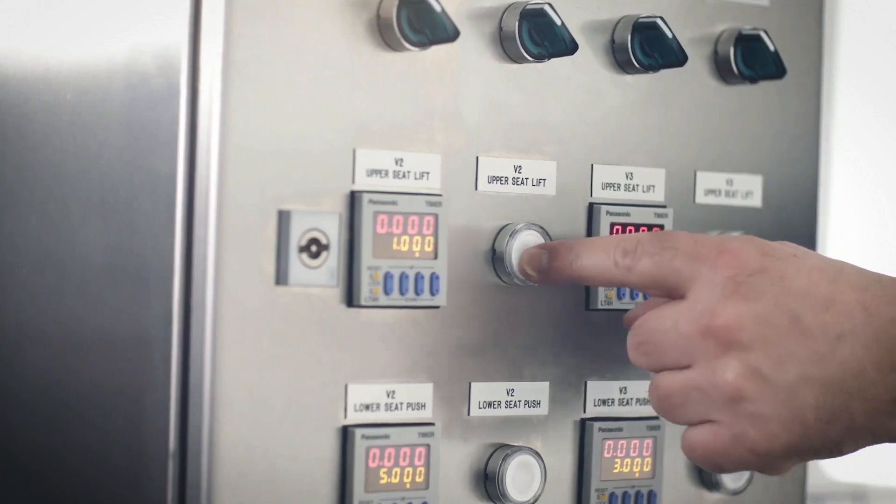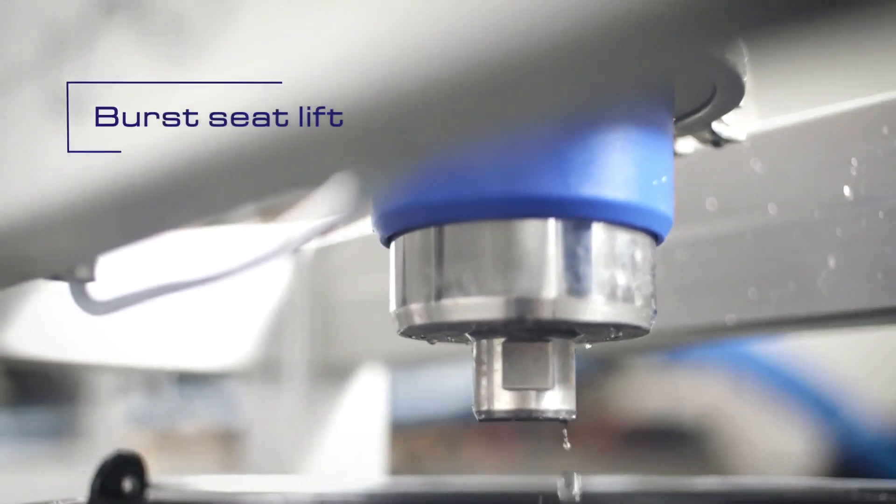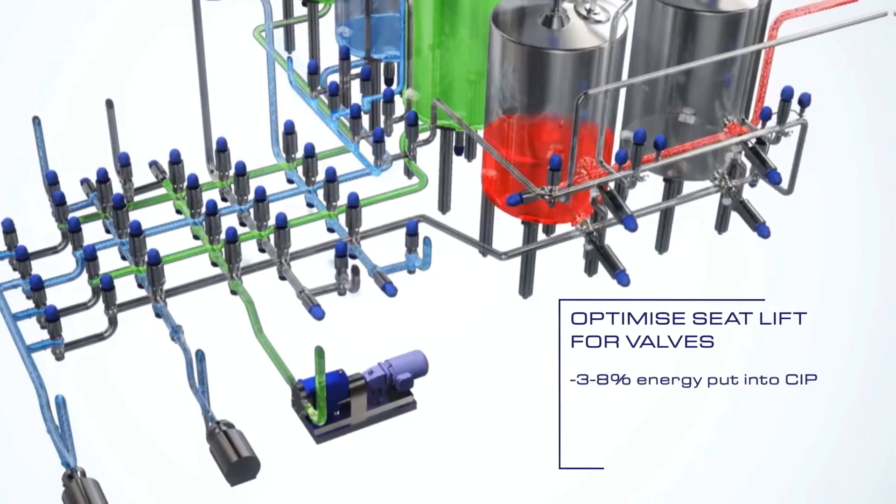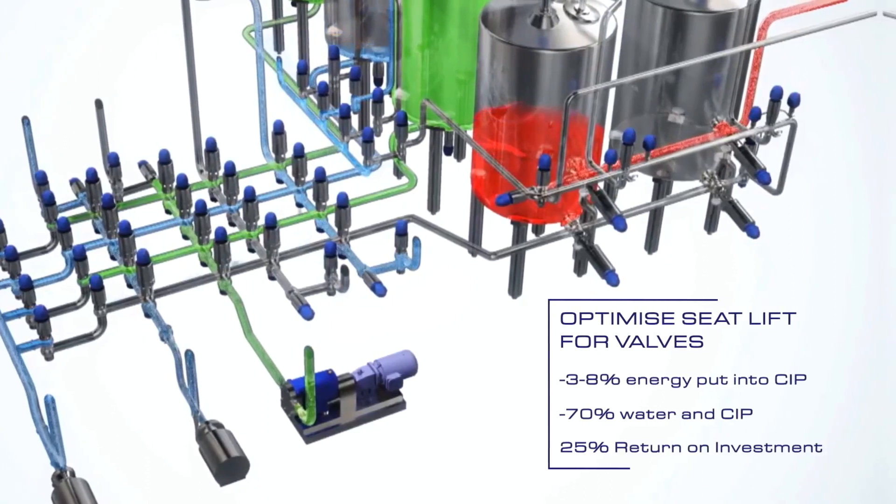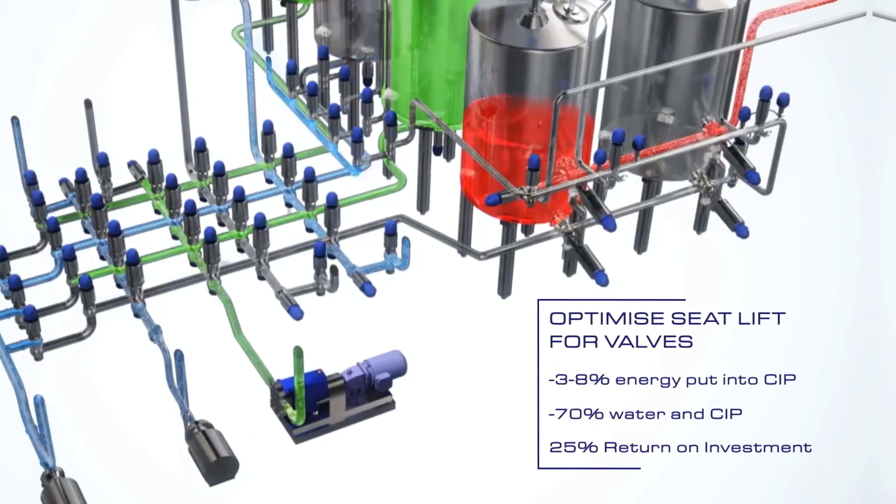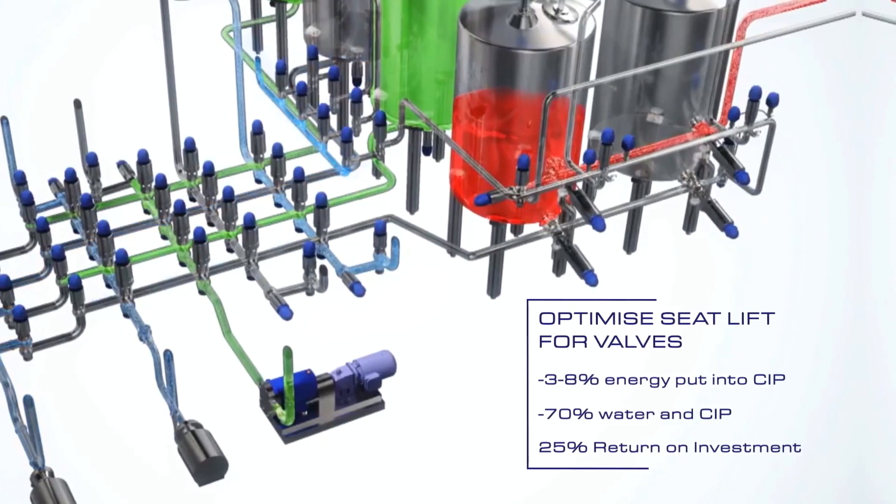Burst seat lift cleaning involves quick and repetitive opening and closing of the seat. Change your valves and controls for burst seat lift to reduce CIP losses and with that energy.